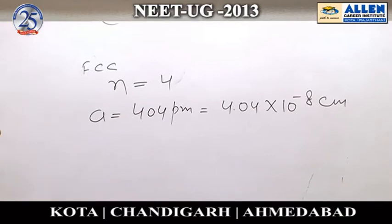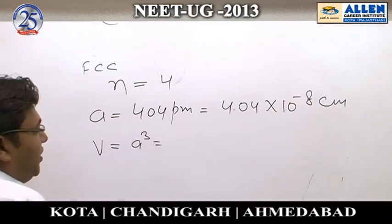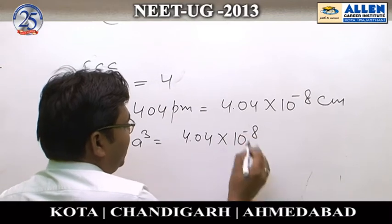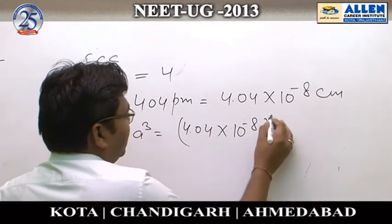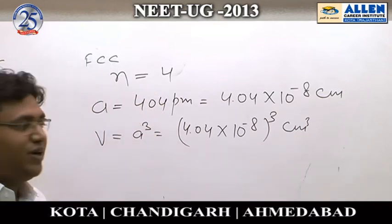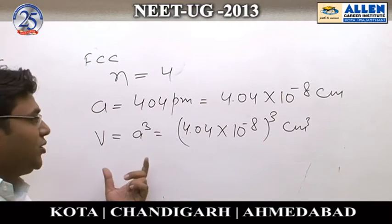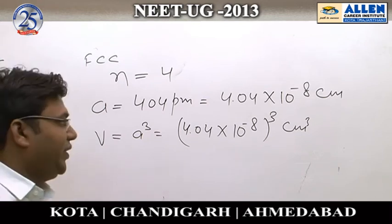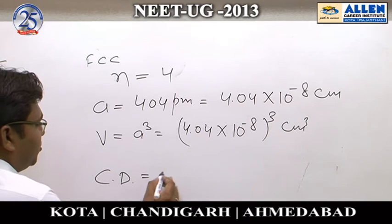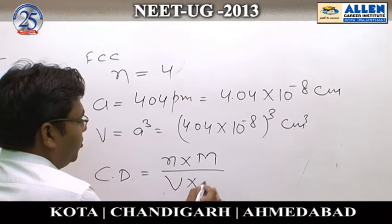The volume of the unit cell is a³, so the volume is (4.04×10⁻⁸)³ cubic centimeters. We want to calculate the molar mass of this element using the crystal density formula: density equals N times molar mass divided by volume times Nₐ.